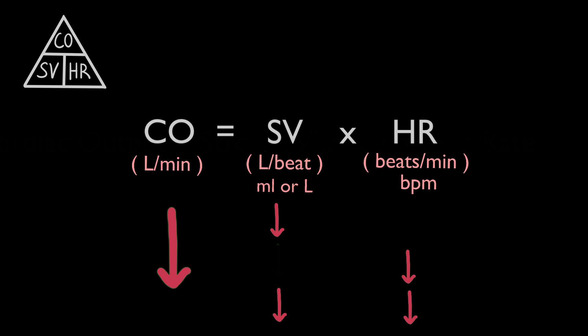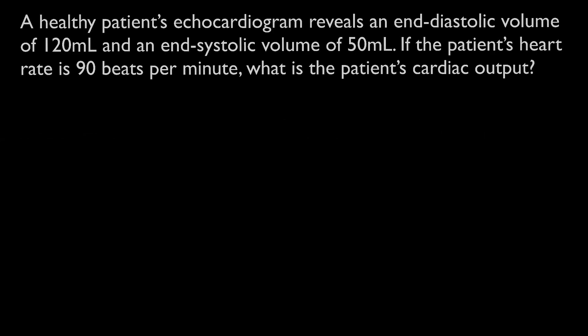Now, time for some questions to test your understanding. A healthy patient's echocardiogram reveals an end diastolic volume of 120 millilitres and an end systolic volume of 50 millilitres. If the patient's heart rate is 90 beats per minute, what is the patient's cardiac output? Pause here if you need more time to think.